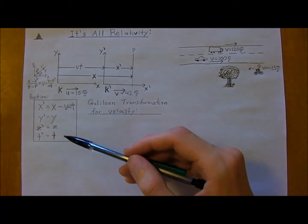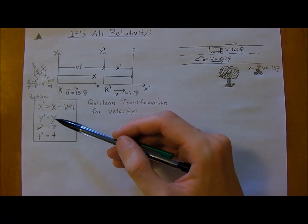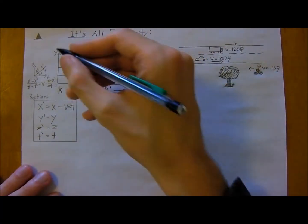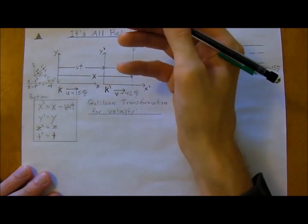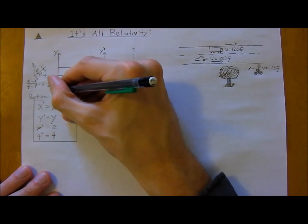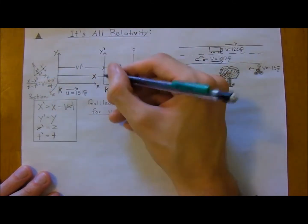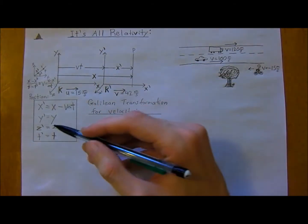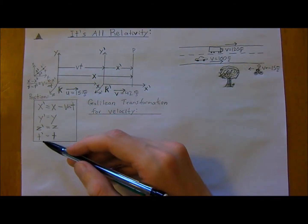You'll notice that y-naught is still y, z-naught, so the z-axis, not even drawn here, but z we'll say is coming out like this, z-naught. So z is still z, t-naught is still t, and the only thing that changes is your x.